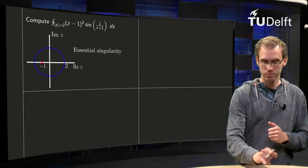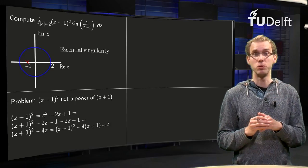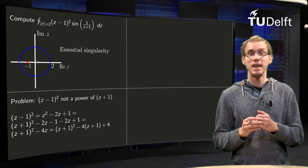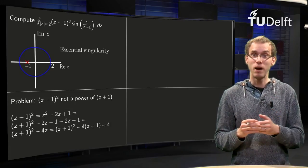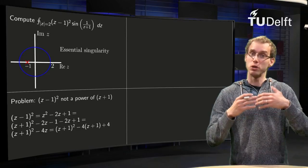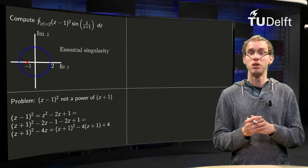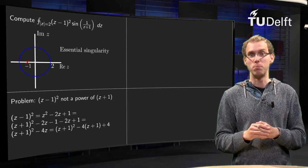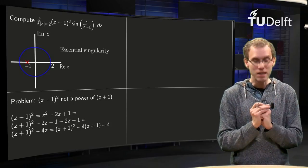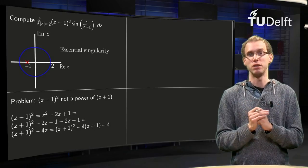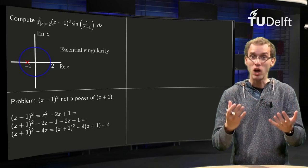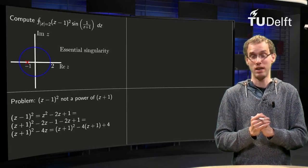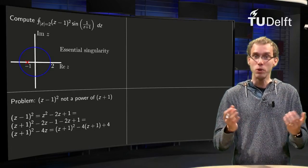So we want to apply the theorem of residues. However, the problem is that at z = -1 we have an essential singularity, so we want to use the Laurent series of sin(1/(z+1)). The (z-1)² factor in front is a problem — we want the Laurent series in terms of powers of (z+1), but we have a (z-1)² instead.